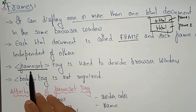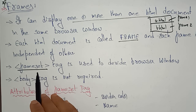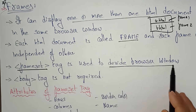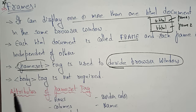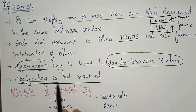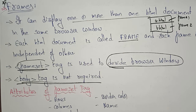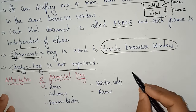The tag we use is the frameset tag. Within the open and close tags you write the frameset tag. The frameset tag is used to divide the browser — it displays one or more HTML documents in the same browser. One important point: whenever you use the frameset tag, the body tag is not required. Only HTML and the frameset tag are enough.